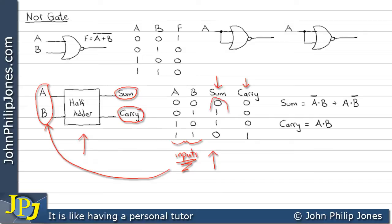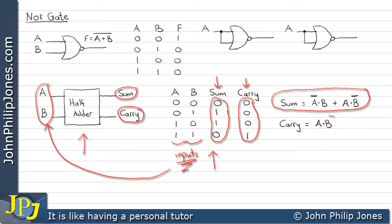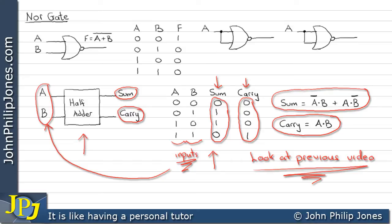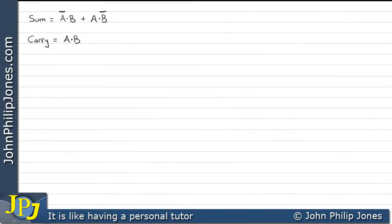We have an output which is a sum and another output which is a carry. Looking at the column for the sum, it gives us this sum of min terms. To build a half adder using only NOR gates, we need to get rid of all of the AND symbols from the sum of min terms.